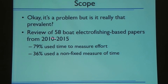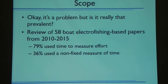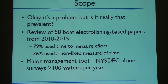I went back through 58 electrofishing papers from the last six years on Web of Science using boat electrofishing search terms, picking out every paper that indicated their measure of catch-per-unit effort. I found that 79% of them used time as their measure of effort, and a third of the total used a non-fixed time — they weren't using set transects. That's a massive number of studies. Even in New York, the DEC surveys over 100 waters a year. This could mean 20 to 30 years of data potentially carrying this bias.